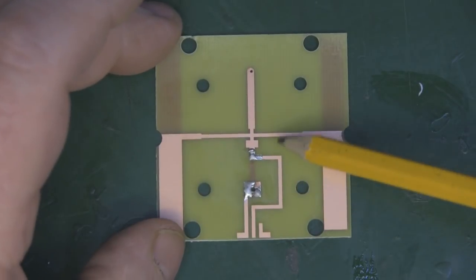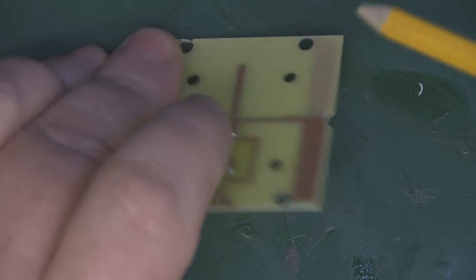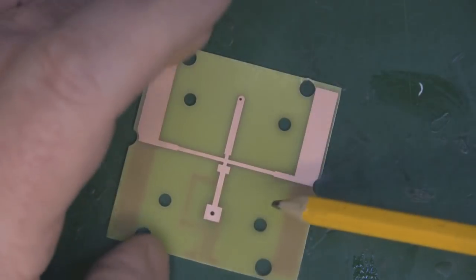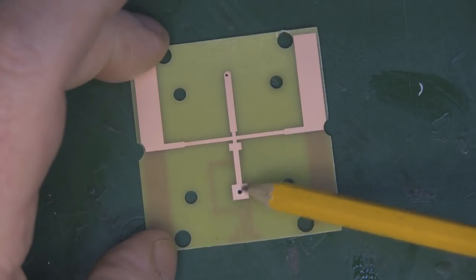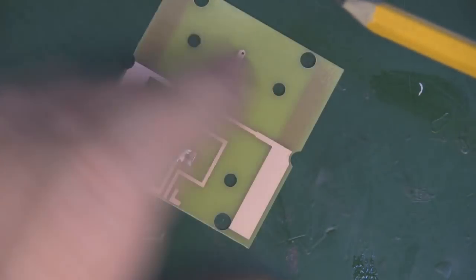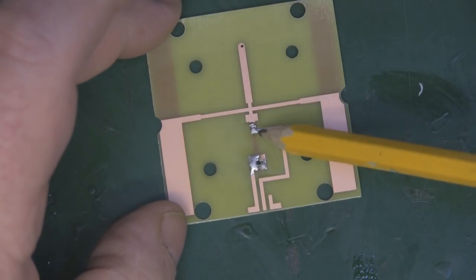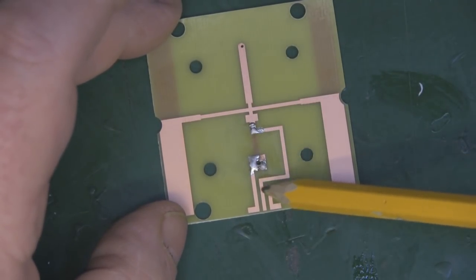Now that we've got it desoldered, we can see this a little bit more clearly. Basically this is the ground feed here and this feeds through to the opposite side through this via just here, so this is the ground element.